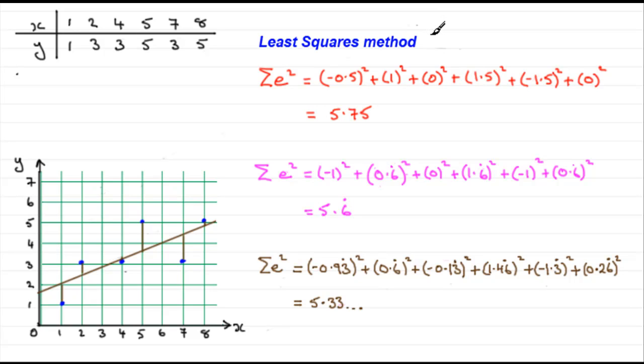Now the question is, how do we get the equation of this line now that we've found that we're looking for the sum of the squares of the residuals to be the least value? Well without any proof, I'm going to show you the method that we use.